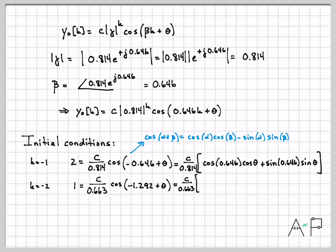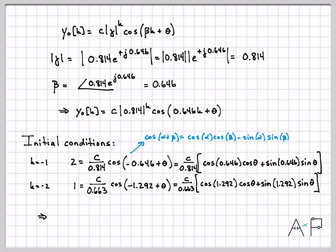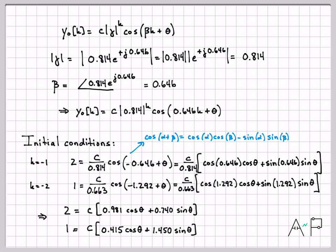Now we can evaluate the numerical quantities in a calculator — making sure to use radians. Values like 0.814 and 0.663 are just numbers we plug in. Multiplying things out, the first equation simplifies to a cleaner form, and the second equation similarly simplifies. It's a bit tedious with the calculator steps, but those details aren't the main focus here.